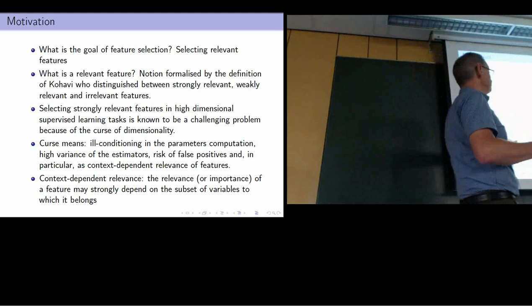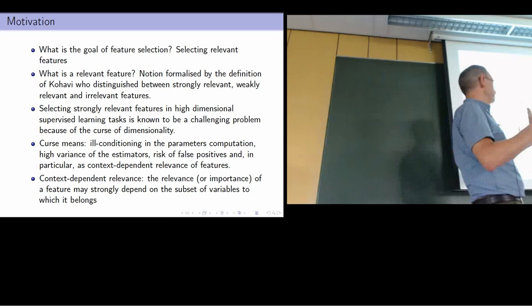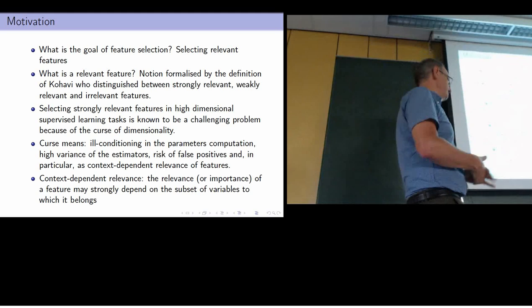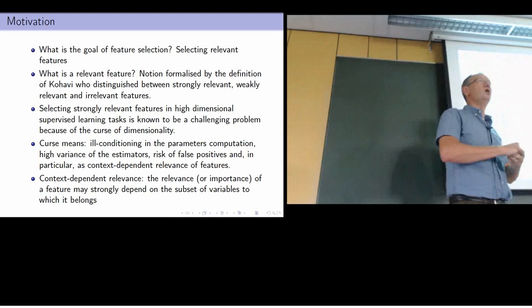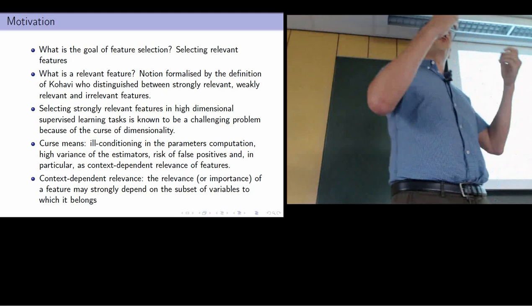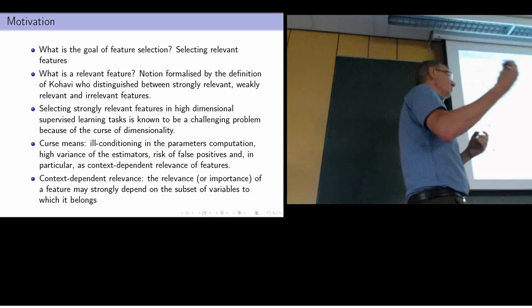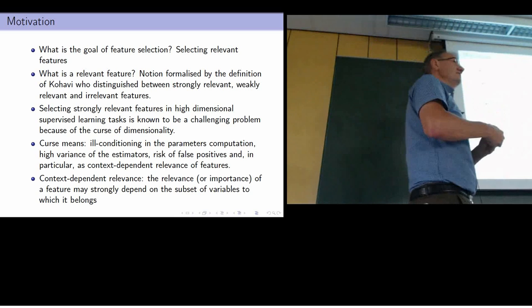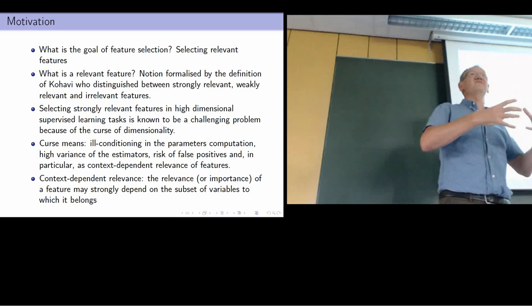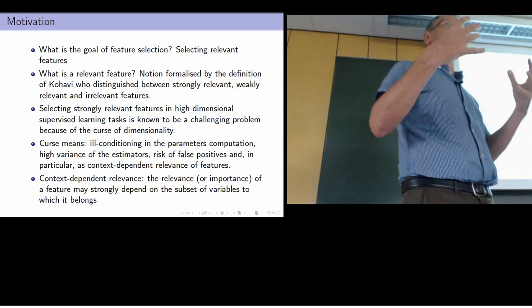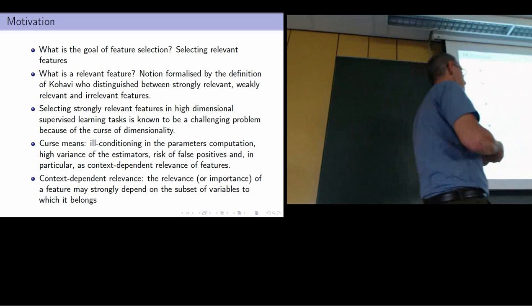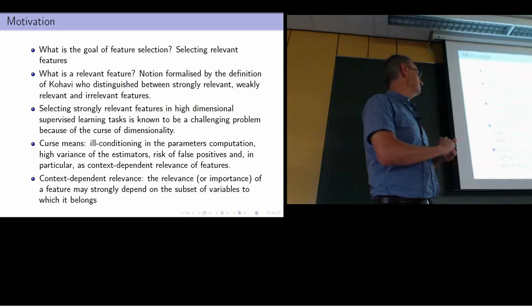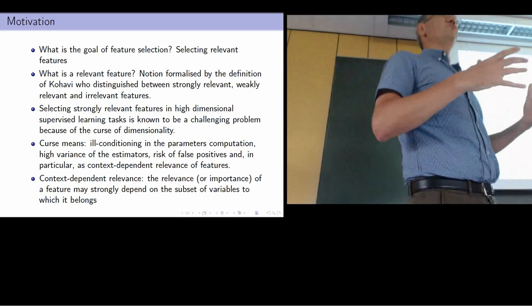Probably the most important part — which also makes the curse very significant — is the context-dependent relevance of features, as Patrick was explaining. If you have a multivariate dependence, the relevance of a variable depends on the context: which other variables you are considering for the model. It could happen that one variable alone is not relevant, but together with a second one it becomes extremely relevant. This notion of context dependence makes feature selection very difficult.